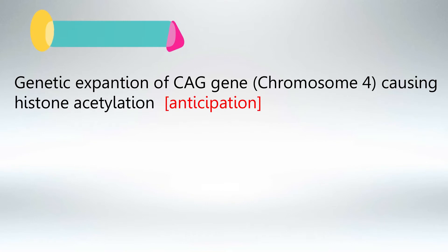The cause of Huntington's disease is expansion of the CAG gene. This will cause defects in the histone acetylation process. It's very important to know that Huntington's disease presents with anticipation, which means that the son will have the disease earlier than his father — each offspring will have the disease earlier than their parent.